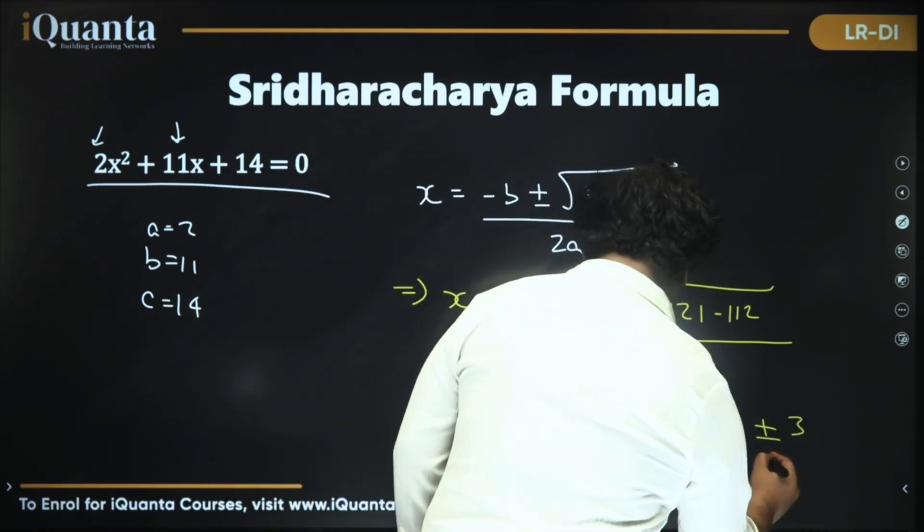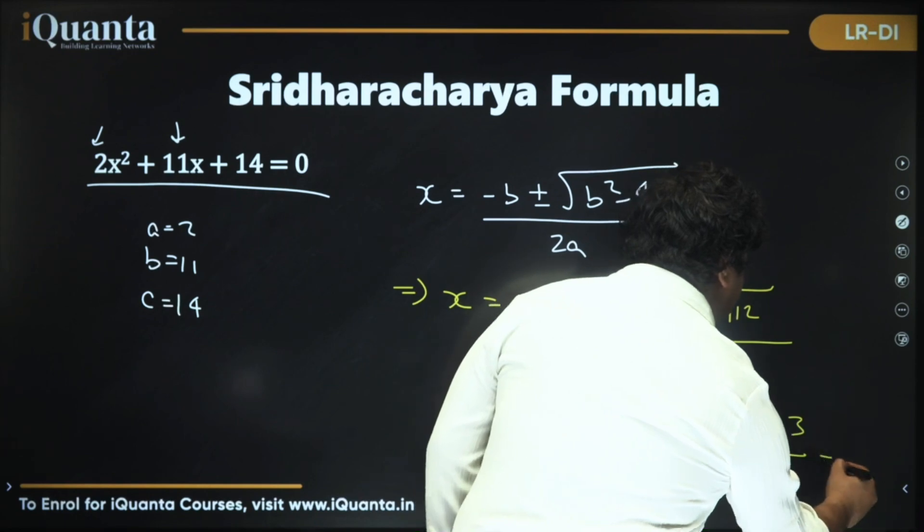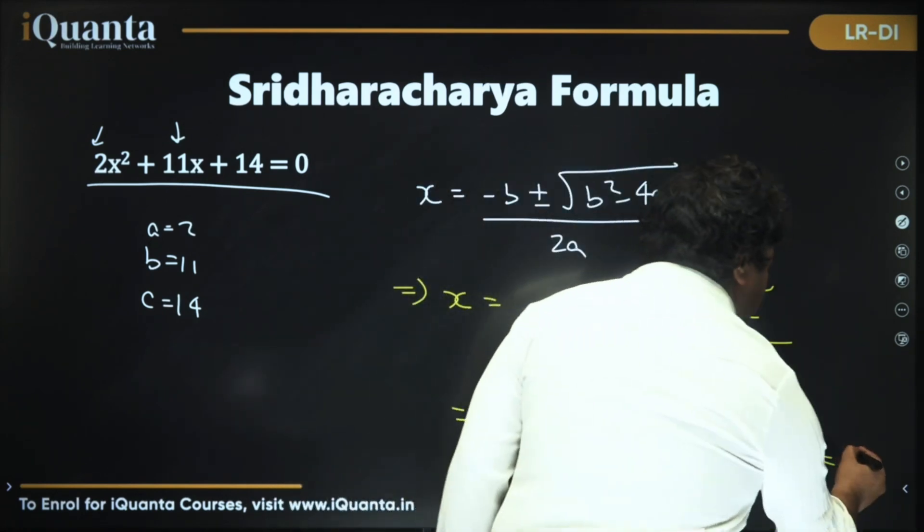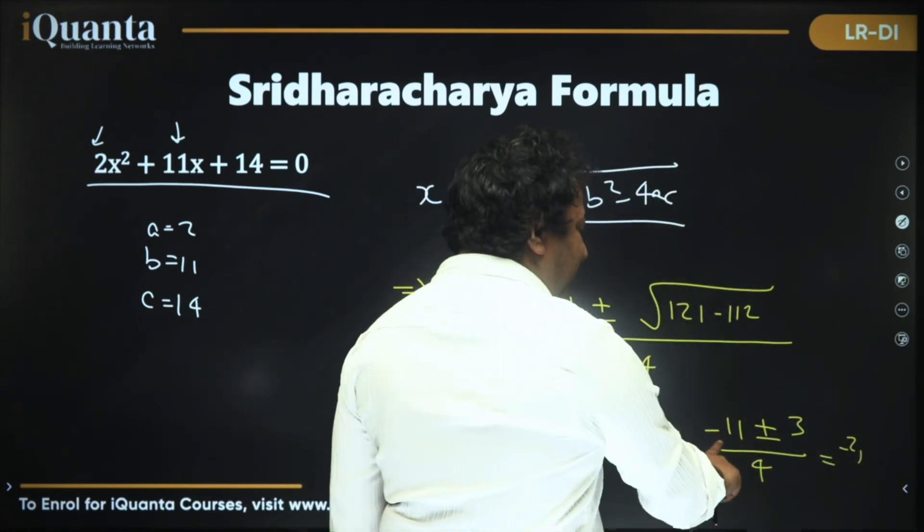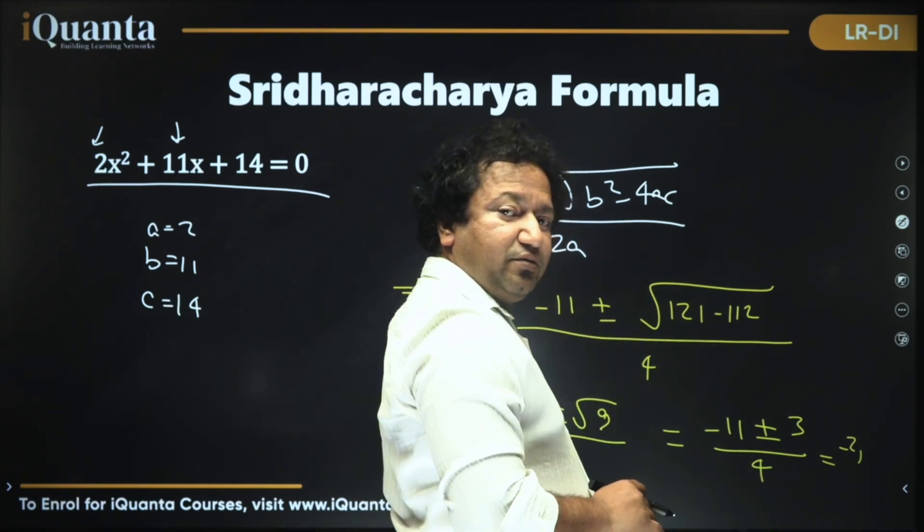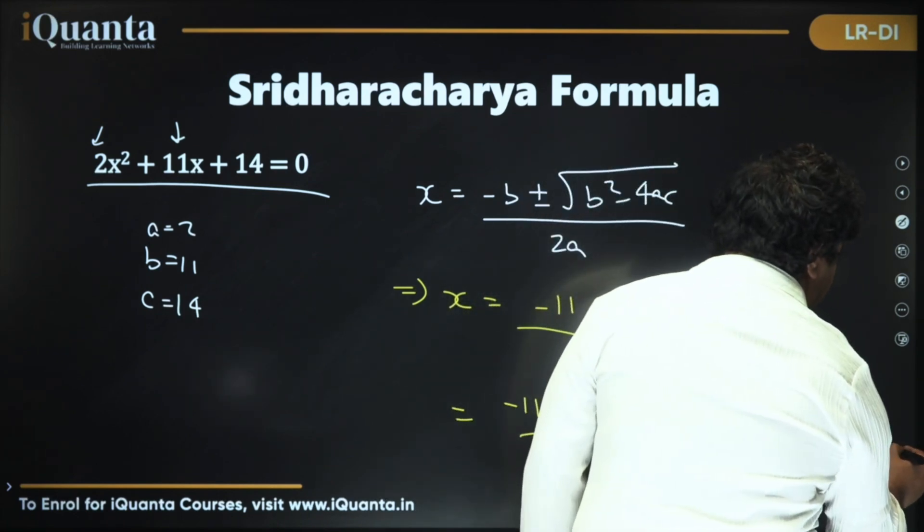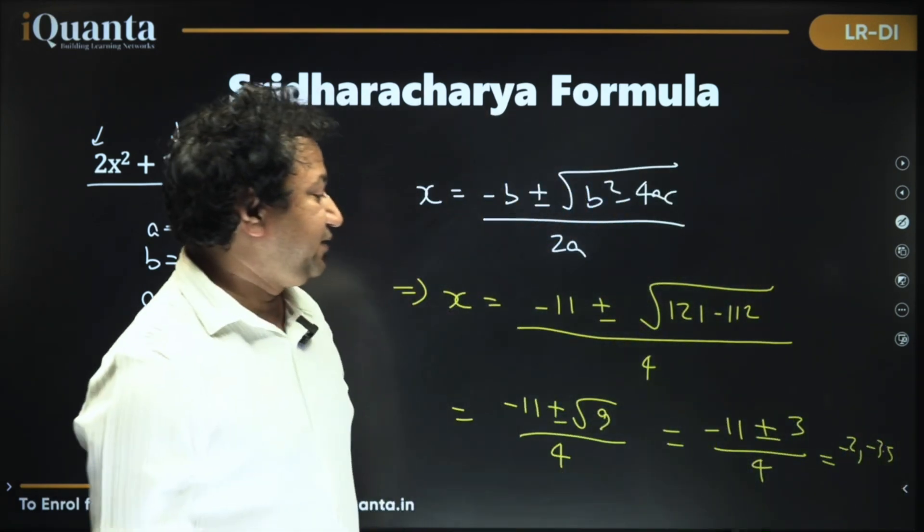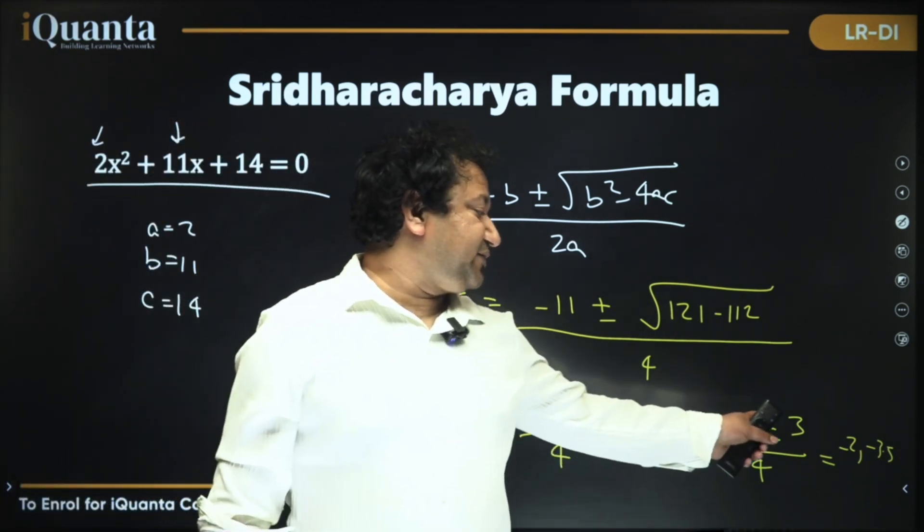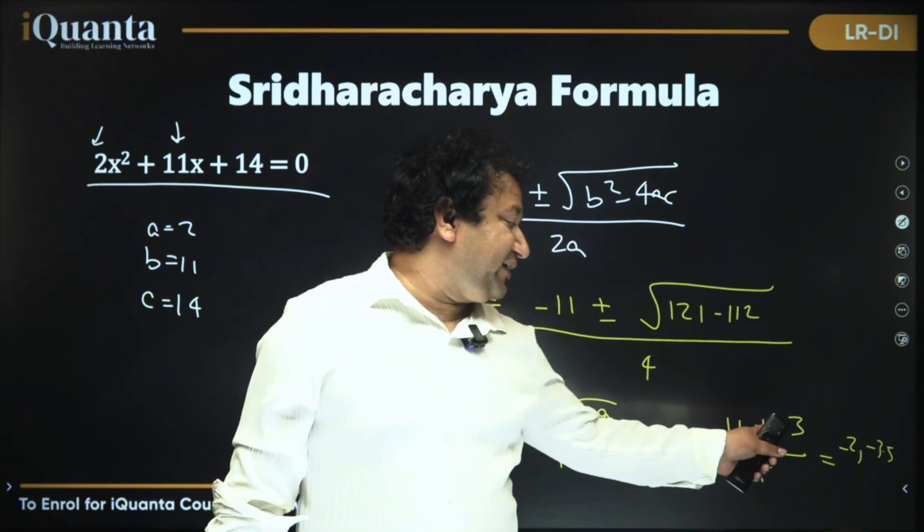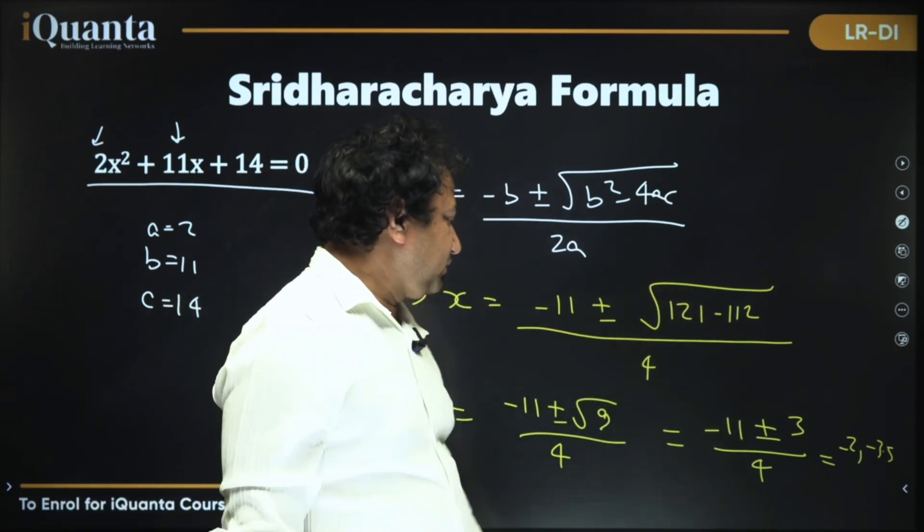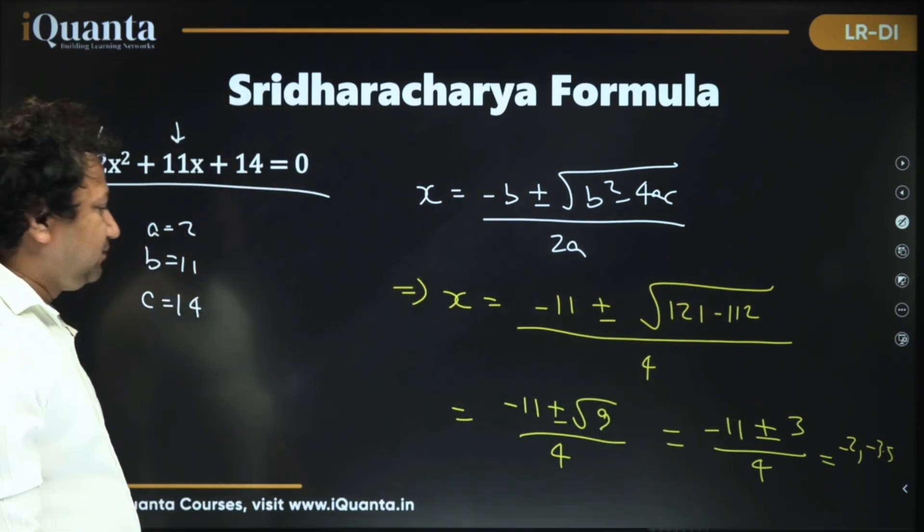So -11 + 3 or - 3, whole upon 4. So -11 + 3 is -8, and -8 / 4 is -2. That is if I took plus. If I take minus, -11 - 3 is -14. -14 / 4 is what we need to calculate. That will be -3.5. So we have two roots here. One is -2, other is -3.5. Let's check it again. -11 + 3 is -8 / 4 is -2. -11 - 3 is -14 / 4 is -3.5. Cool. Both the roots are negative in this case.